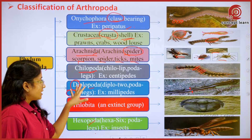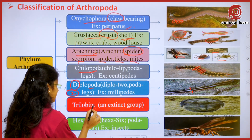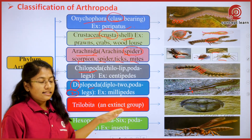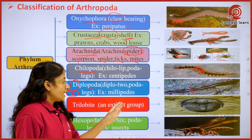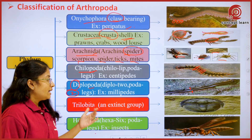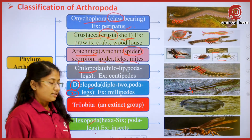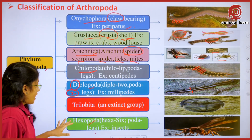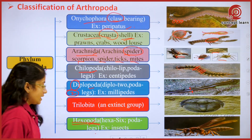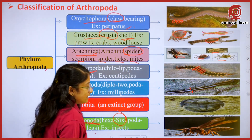In Diplopoda there are two pairs of legs per segment, and millipedes are the living organisms that generally come under the class Diplopoda. Trilobita — these trilobites are an extinct group. Extinct means these groups have been extinct and are not presently seen in nature.